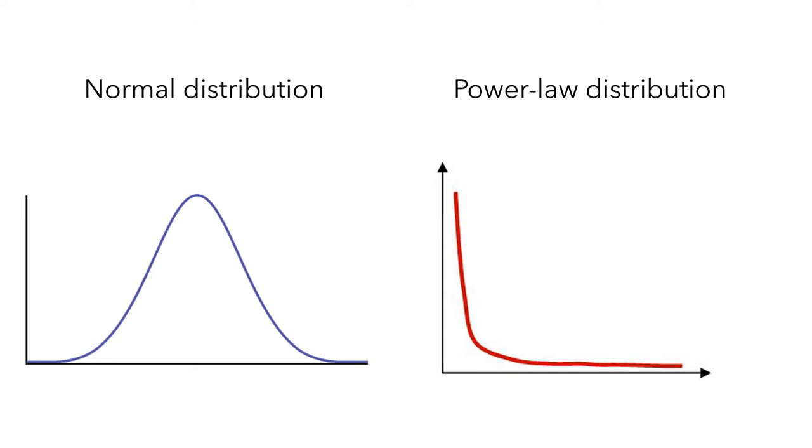Second, the rate at which the power law decays is much slower than the decay rate for a normal distribution. This is why you see a long tail in the power law distribution. This suggests extreme events are more likely to take place in power law distribution than a normal distribution.